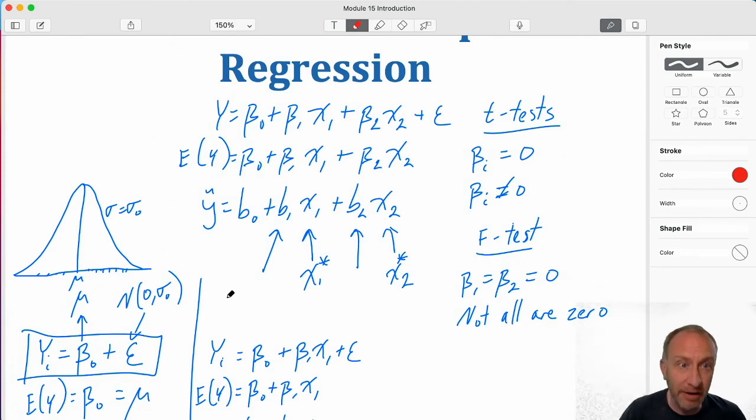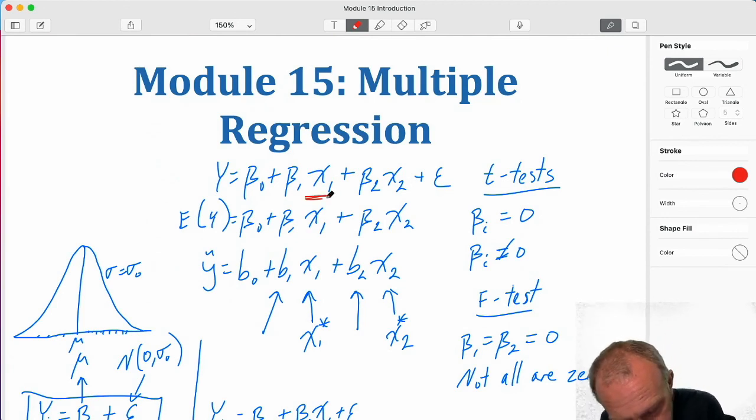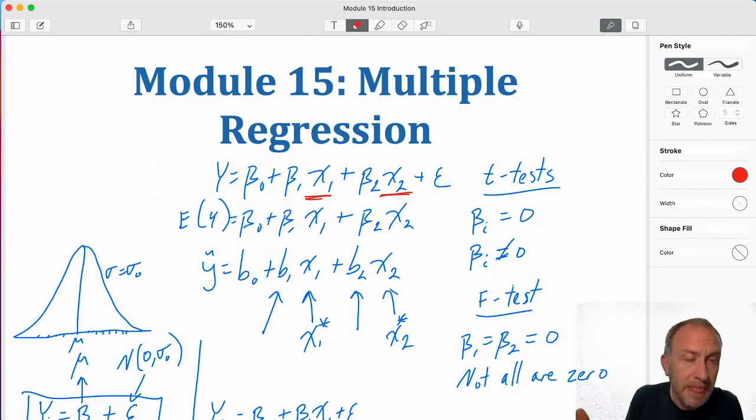Our R squared becomes a little less valuable. And so we'll have something called an adjusted R squared. We'll talk about that a little bit more later. We also have the potential for a problem called multicollinearity.